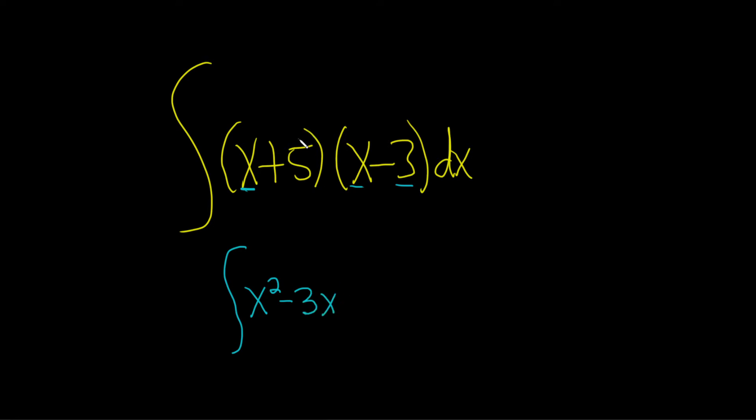Then we do the 5. 5 times x is 5x, and 5 times -3 is -15.